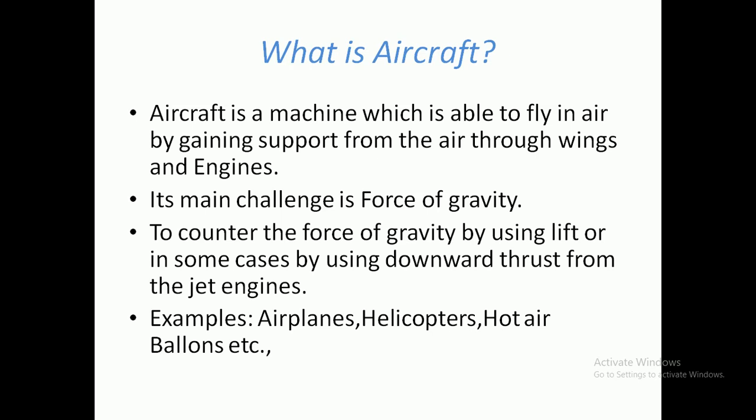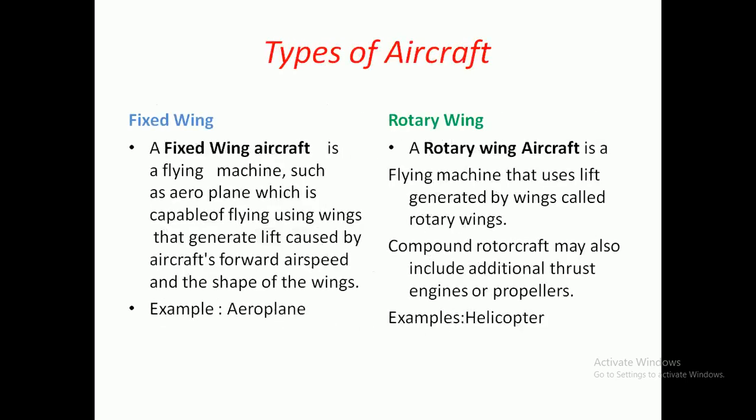Some examples are aeroplanes, helicopters, and hot air balloons. Coming to the types of aircraft, there are two types: fixed wing and rotary wing. A fixed wing aircraft, such as an aeroplane, generates lift caused by the aircraft's forward airspeed and the shape of the wings. A rotary wing aircraft uses lift generated by rotating wings, and may also include additional thrust engines or propellers — the helicopter is a key example.